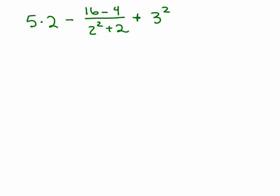All right, let's do this one. Again, basically, you have something minus something else plus something else. So, we can go ahead and do this 5 times 2 first and the 3 squared at the same time that we're simplifying this numerator and denominator here. So, let's go ahead and do that.